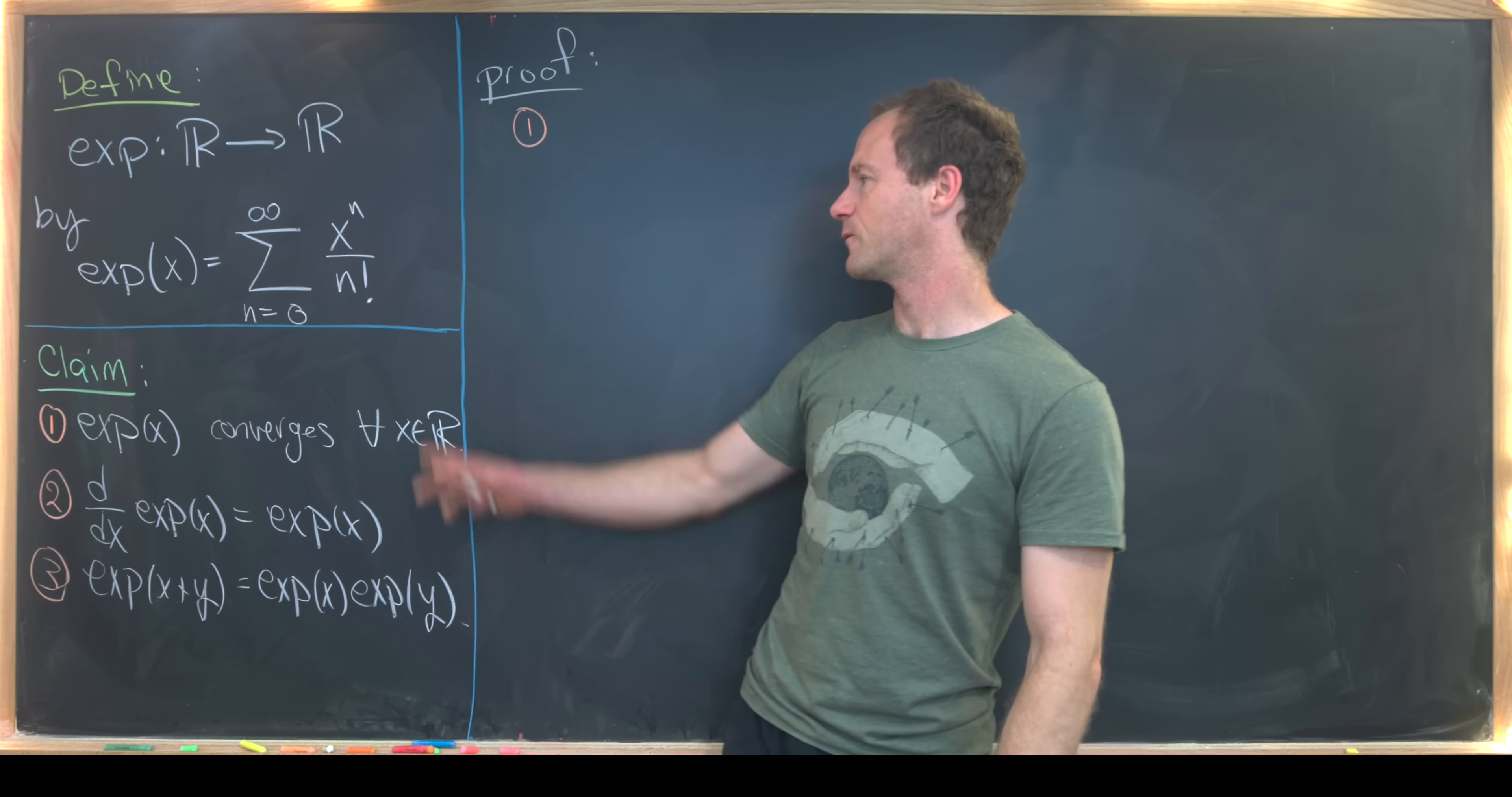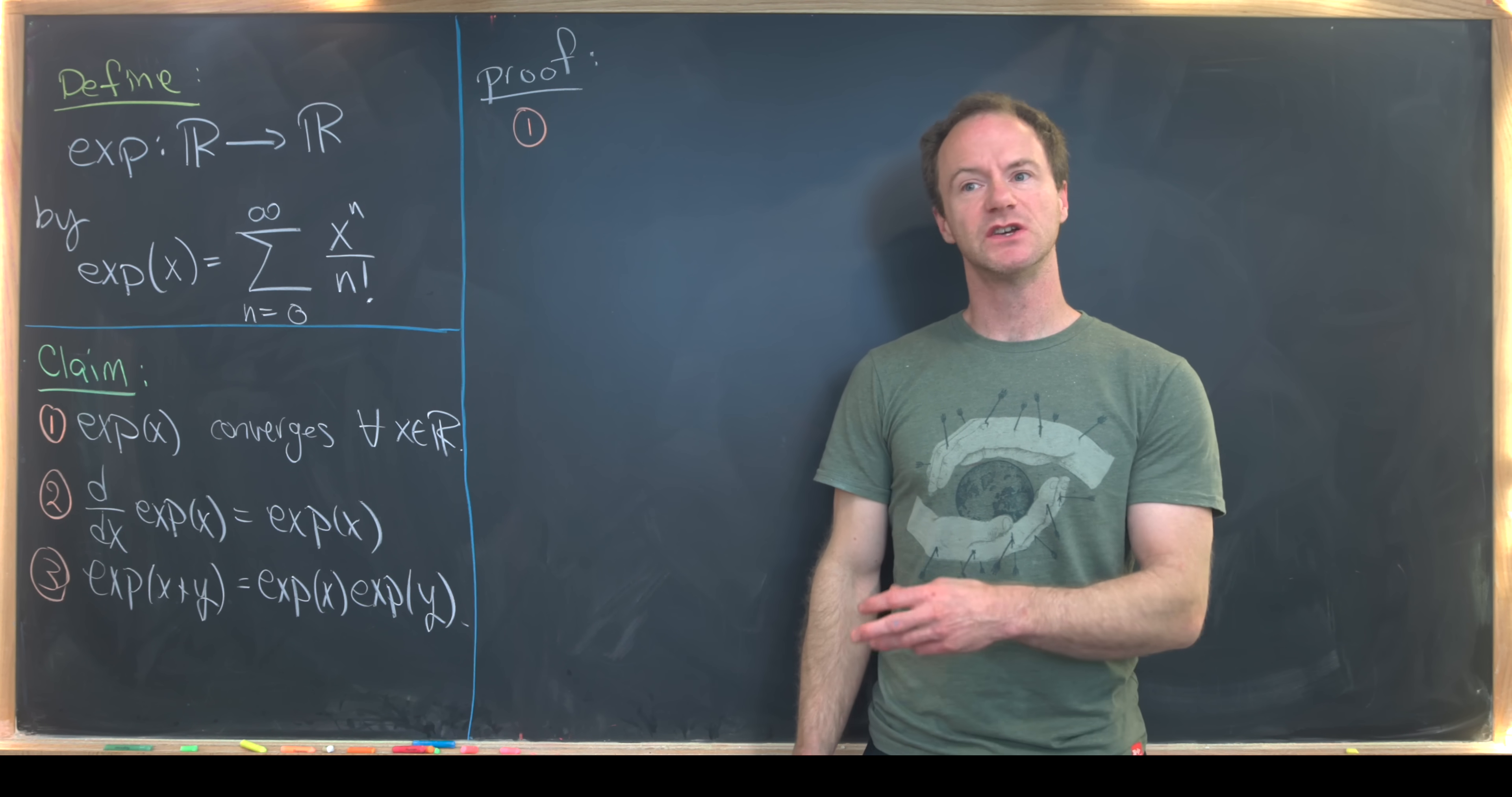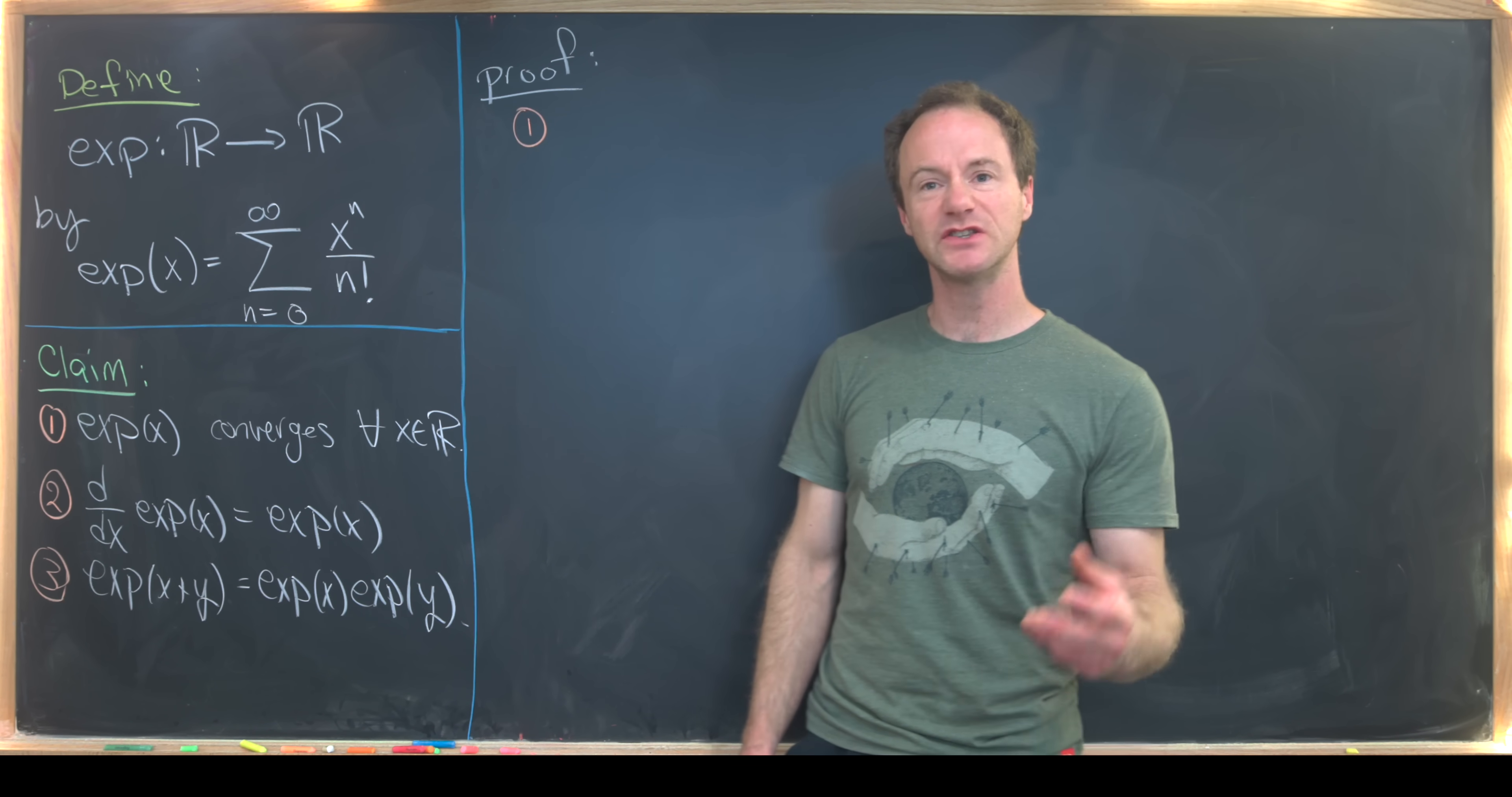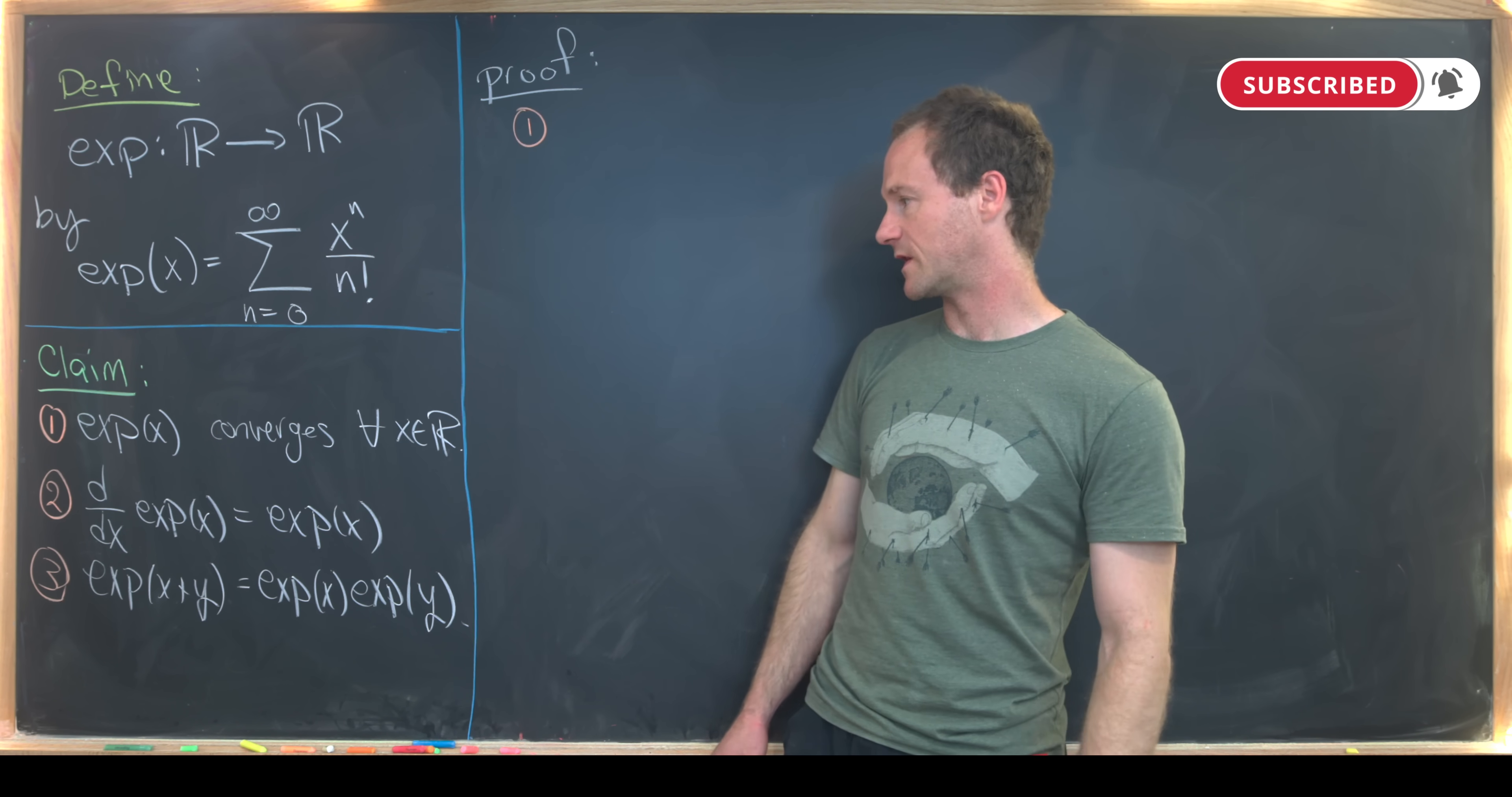But what I want to show is that if we take this function and apply some sort of forgetful function to ourselves, so we forget that it's connected to e to the x at all, that it still satisfies the rules that e to the x satisfies. And this is just by direct manipulation of this power series. And so we'll prove the following things.